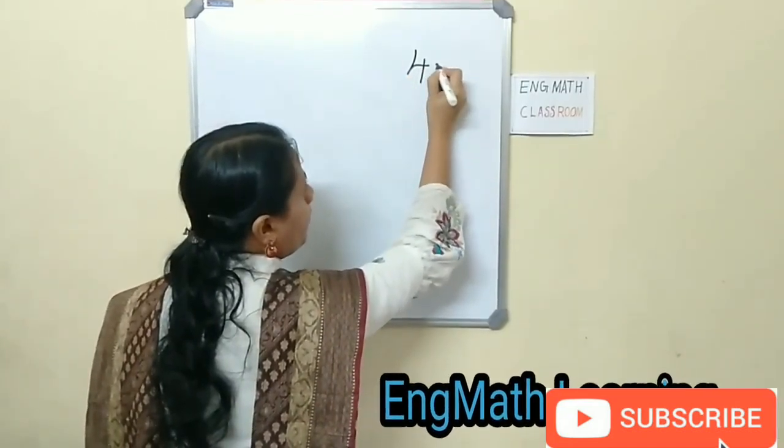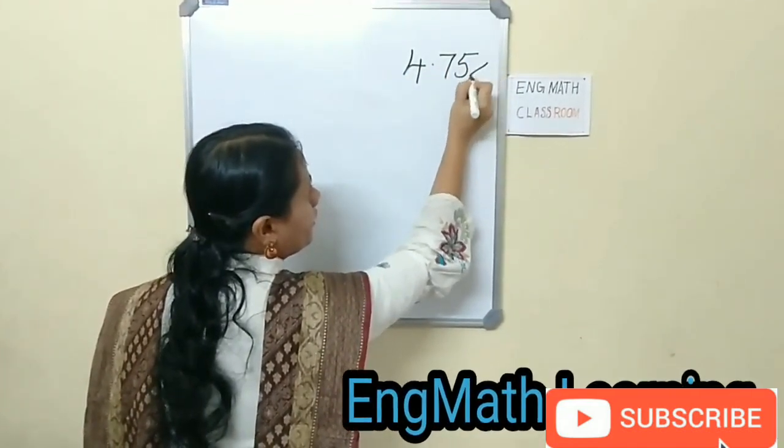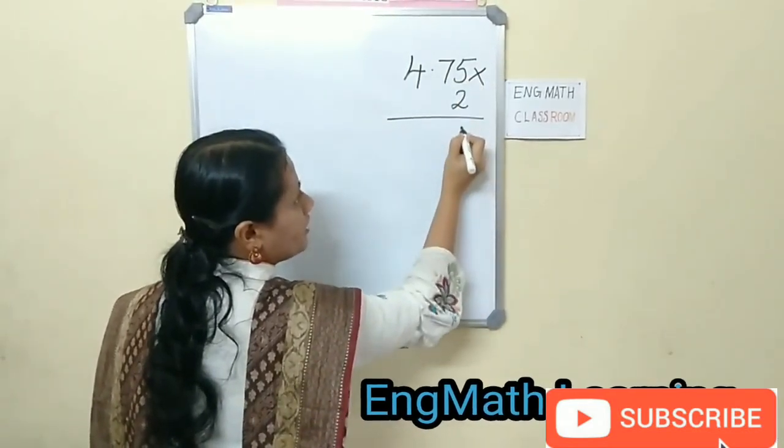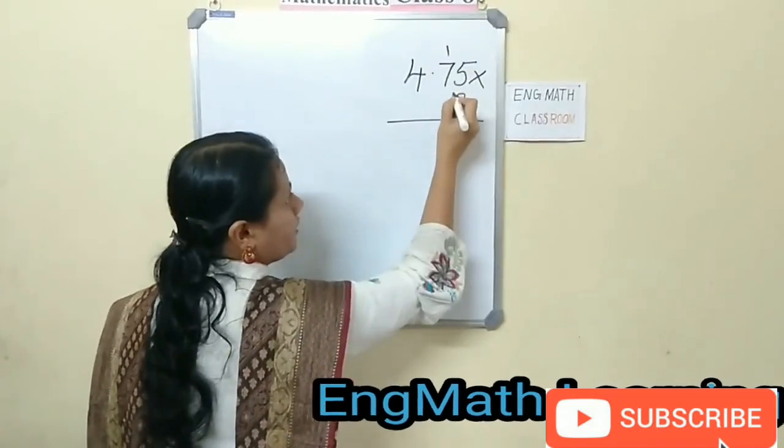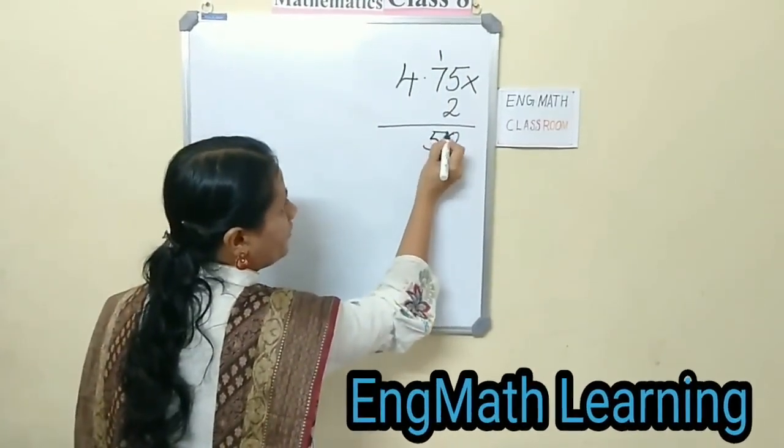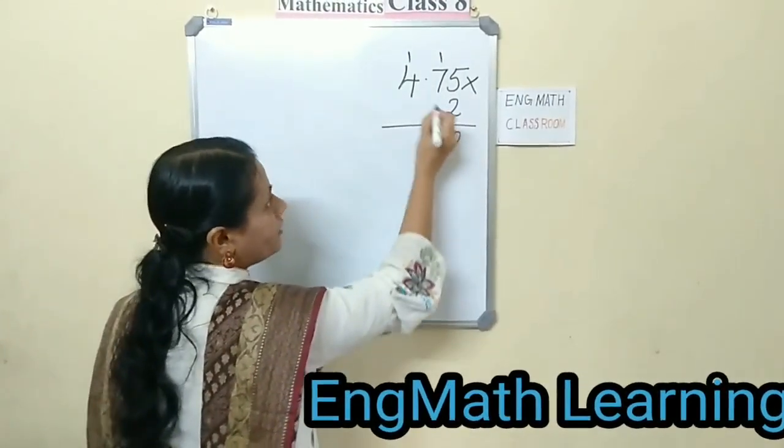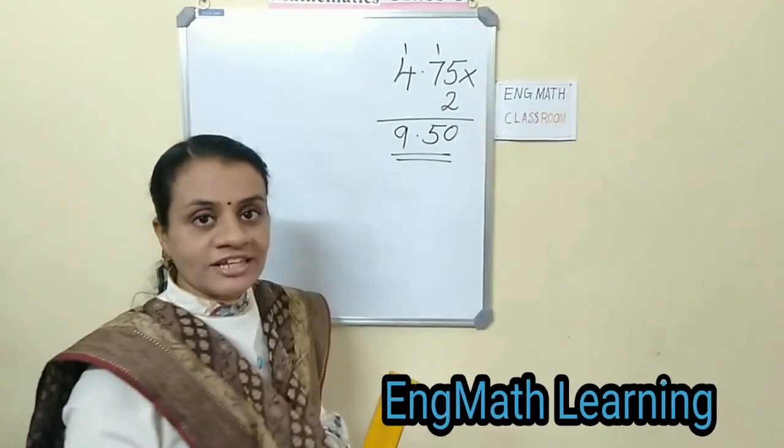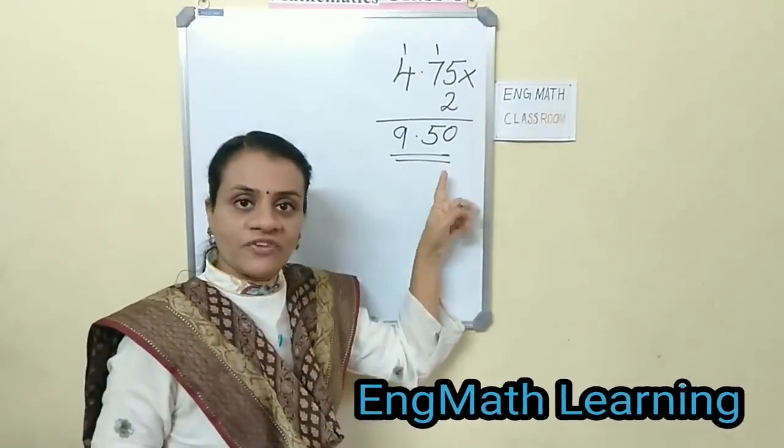4.75 times 2: 5 times 2 is 10, carry 1. 7 times 2 is 14, plus 1 is 15. 4 times 2 is 8, plus 1 is 9. You get the length 9.5 cm.